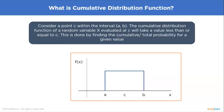In layman's terms, the cumulative distribution function can be defined as the probability that a random variable is not greater than a given value. In a random trial, the outcome of a random variable will be less than or equal to any specified value of x. When plotted on a graph with the horizontal axis as x and the vertical axis ranging from 0 to 1, the CDF evaluated at point c takes a value less than or equal to c.